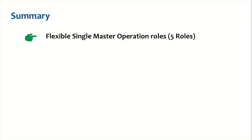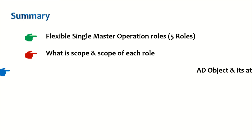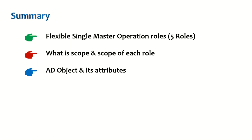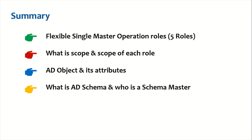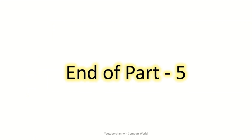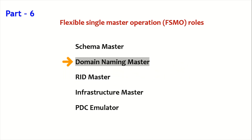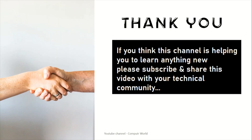Let's take up the summary of today's session. We have understood all five FSMO roles, the scope of each role, Active Directory objects and their attributes, and what Active Directory schema is and who is a schema master. This is the end of part 5. In part 6, we'll be diving into the next FSMO role — domain naming master. Thank you for joining, and if this channel is helping you learn something new, please share and subscribe. Have a great day ahead.